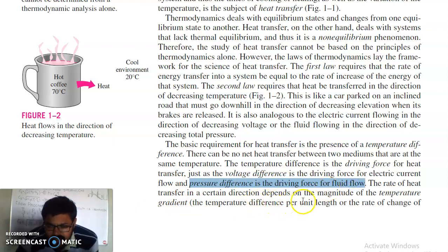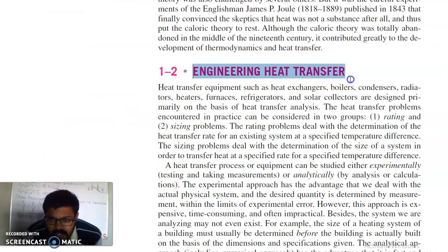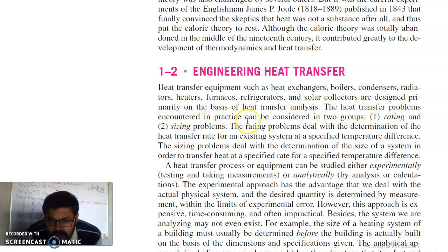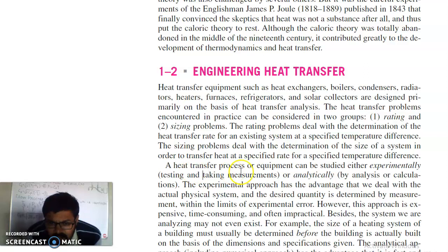The rate of heat transfer in a certain direction depends on the magnitude of the temperature gradient in that direction. Engineering heat transfer equipment such as heat exchangers, boilers, condensers, radiators, heaters, furnaces, refrigerators, and solar collectors are designed primarily on the basis of heat transfer analysis. The heat transfer problems encountered in practice can be considered in two groups: rating and sizing. Rating problems deal with the determination of the heat transfer rate for an existing system at a specified temperature difference. Sizing problems deal with the determination of the size of a system in order to transfer heat at a specified rate for a specified temperature difference.